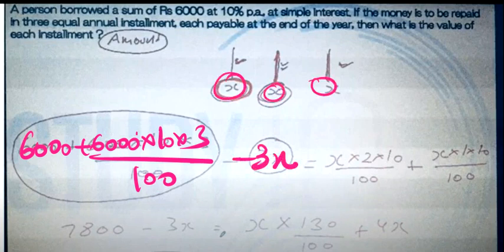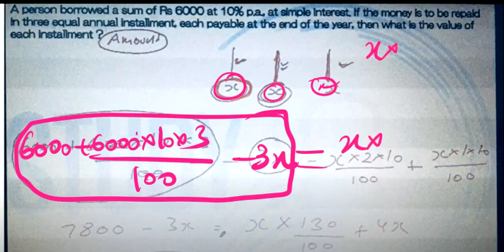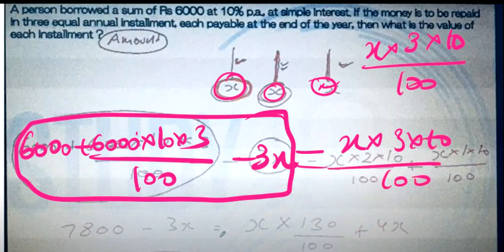So minus 3x - if you don't have interest on this amount, then how much interest will there be? For 3x you will have interest in 3 years, that is x into 3 into 10 divided by 100. But because you have paid it, you will not pay any interest.